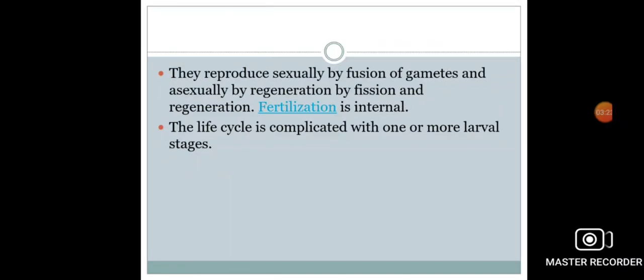Platyhelminthes reproduce both sexually and asexually. When they reproduce sexually, fertilization is always internal. Asexual mode of reproduction is by regeneration and by fission. The life cycle is complicated and the development is indirect. It means that during the life cycle, one or more larval stages are seen, and such larval stages are modified into adult individuals.